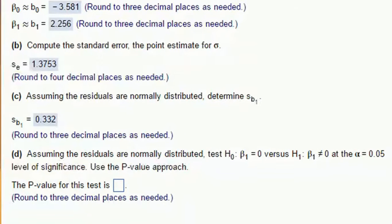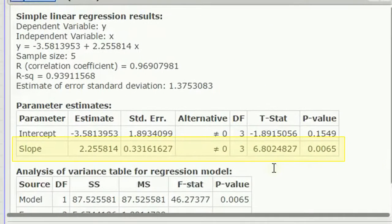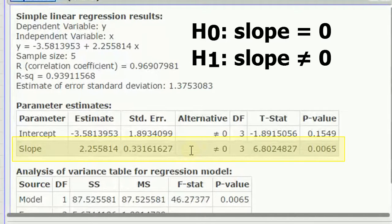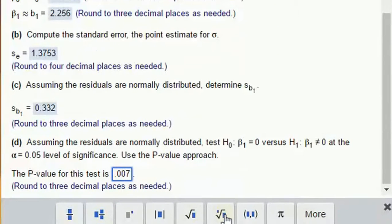If the residuals are normally distributed, the standard error of b1, for each of these estimates, we're given a standard error right next to it. So for the slope, the standard error is right here. I'm just going to copy, oh, it's 0.33, but I have to round it up to 0.332 to get three decimal places. The standard error is what we're asked for. When I say s with a little subscript b1, remember b1 is the slope, so the standard error of b1 is that number. Check it out. Now, assuming the residuals are normally distributed, test that the null hypothesis of beta 1 equals 0 versus the alternative beta 1 not equal to 0.